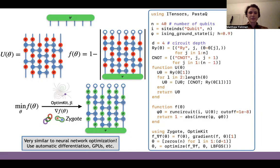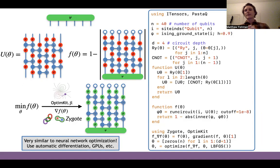Zygote takes the gradient through approximating the quantum circuit as a matrix product state and then taking the overlap of that MPS with the wave function. There's a complicated set of operations, but it's all handled internally using ChainRules and Zygote. For those familiar, this is very similar to a neural network optimization. Just like with neural networks, in order to do variational quantum algorithms like this, we make use of the same types of tools: automatic differentiation and GPUs. The idea is that we can create a variety of different cost functions to optimize for things like low energy or minimal eigenvectors of some exponentially large Hermitian operator.